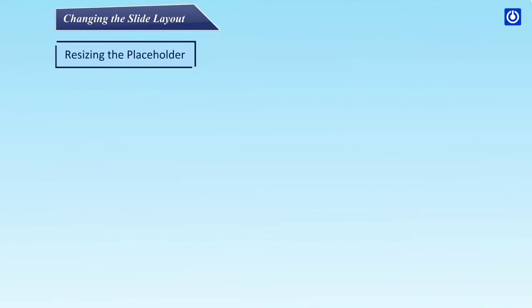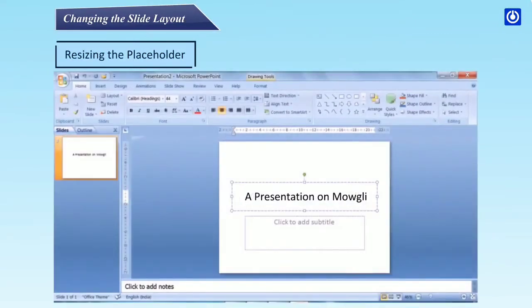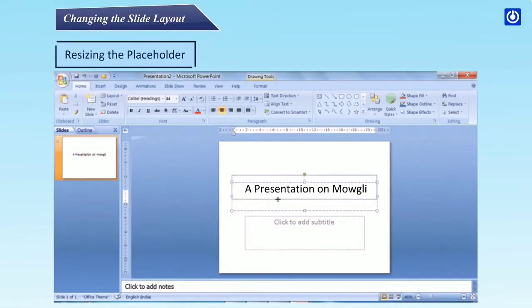Resizing the placeholder: step one, click on the placeholder — a border will appear; step two, position the pointer on the border; when it changes, drag the mouse to resize the placeholder; step three, release the mouse button as the placeholder resizes.